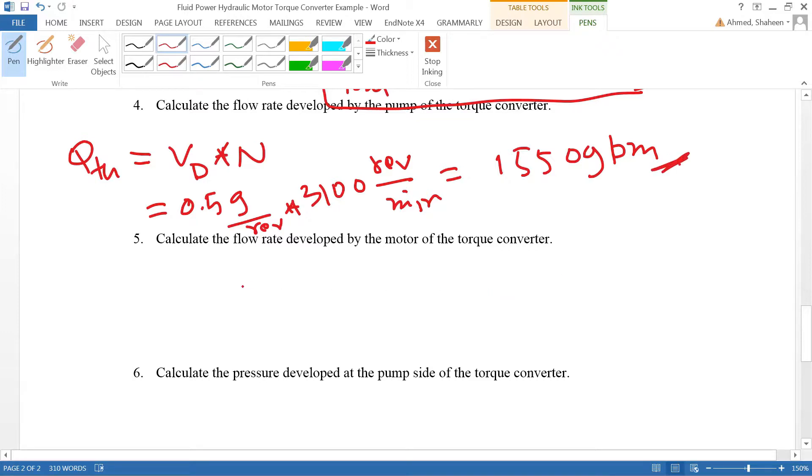Calculate the flow rate developed by the motor. We can do the same thing. The motor volumetric displacement is also given, 0.5 gallon which is 2 quart, so that's 0.5 gallon per every revolution times the motor is running at 300 RPM.